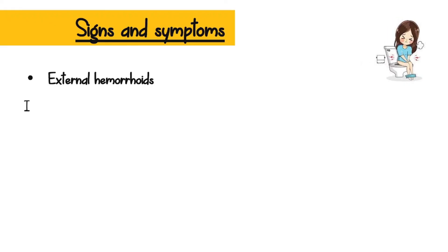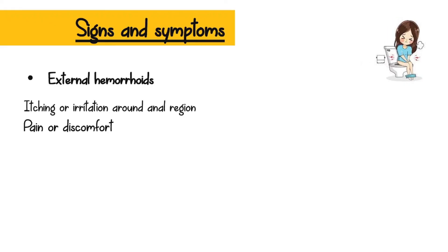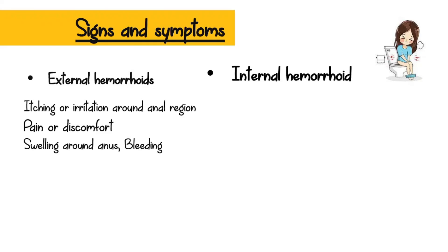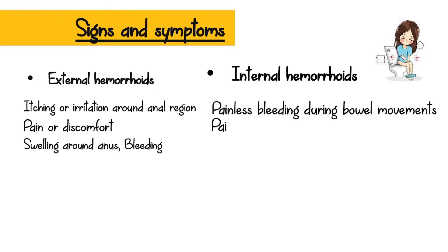Signs and symptoms of hemorrhoids: due to external hemorrhoids — itching or irritation around the anal region, pain or discomfort, swelling around the anus, and bleeding can occur. Due to internal hemorrhoids — painless bleeding during bowel movements, and pain and irritation may be the main complaints.